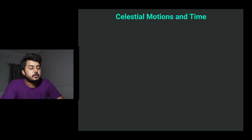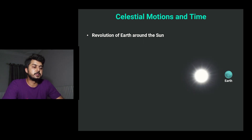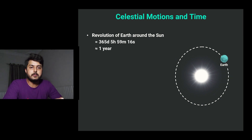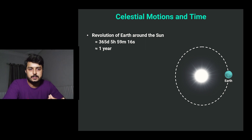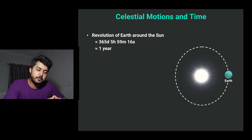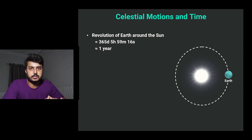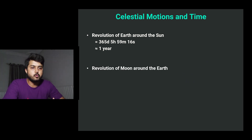First, there is the revolution of the Earth around the Sun. The Earth revolves around the Sun on its orbit and it takes about 365 days, 5 hours, 59 minutes, and 16 seconds — approximately 365.25 days, which equals one year. Our calendar year is 365 days, but after every four years we have a leap year, because that 0.25 accumulates to make one extra day every four years.